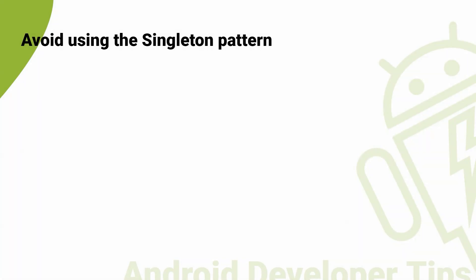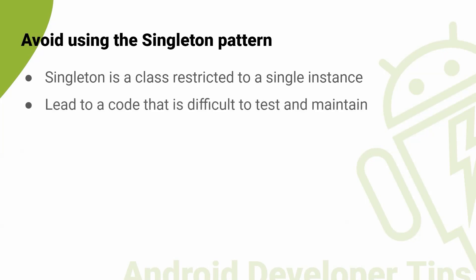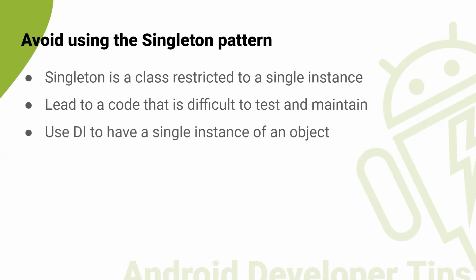Avoid using the singleton pattern. The singleton pattern restricts a class to a single instance and provides a global point of access to that instance. While it can be useful in some cases, it can lead to code that is difficult to test and maintain. Using a dependency injection framework is a better approach. With Hilt or Koin, you can define your dependencies in a clear and modular way, which makes it easier to test and maintain your code.